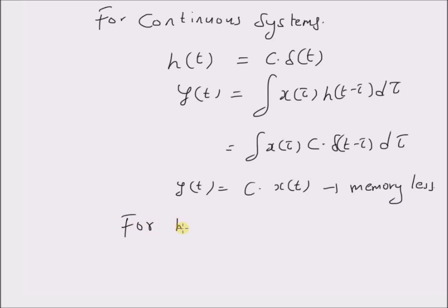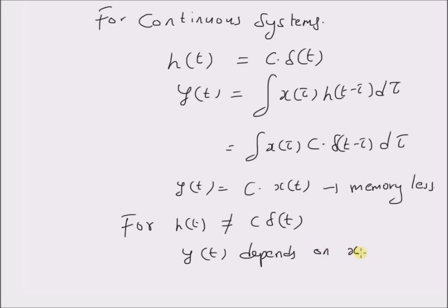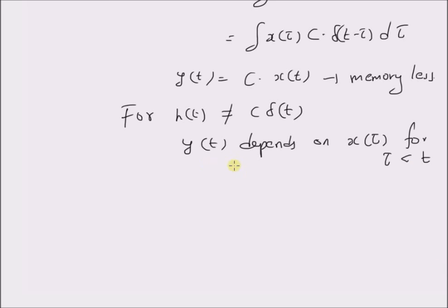For h of t not equal to c times the impulse signal, then y of t depends on x of tau for tau less than t. That is, in this case, the system has memory.